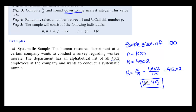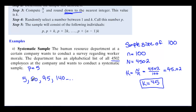Now we need to pick a number between 1 and k as our starting point — often the directions will give you this number. If the starting number is 5, then we pick the 5th person, then the 50th, then the 95th, then the 140th, and so on — picking every 45th person starting with number 5. That's systematic sampling.